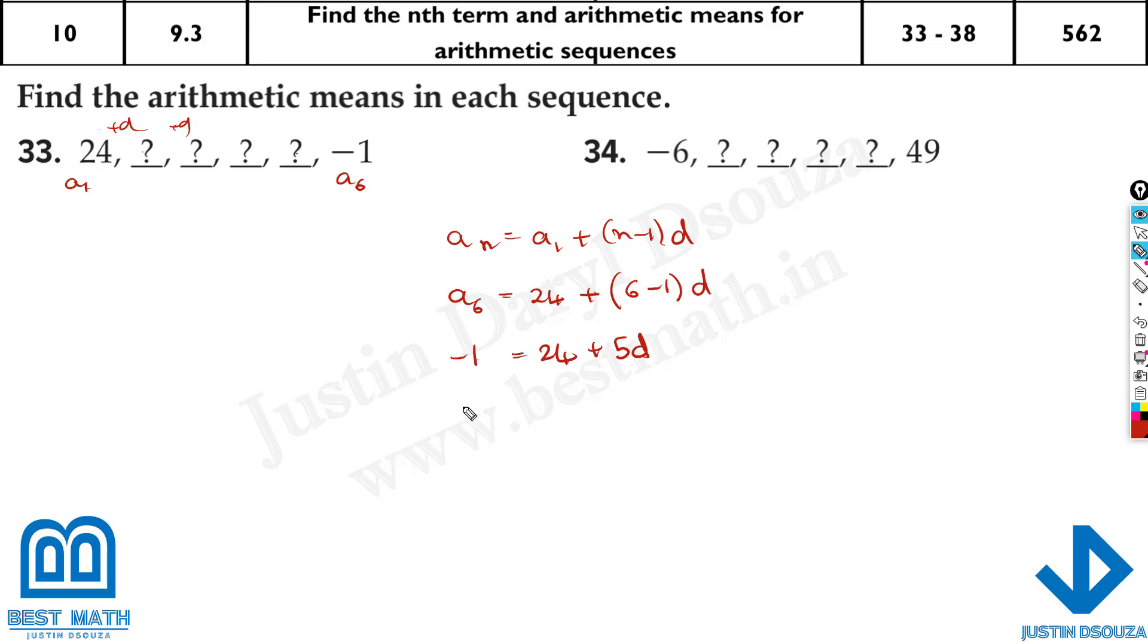Let's take this 24 to the other side. It will be minus 24. So minus 1 minus 24 equals 5 times d. That's minus 25 equals 5d. Let's divide both sides by 5. And you're going to get minus 5 equals d.